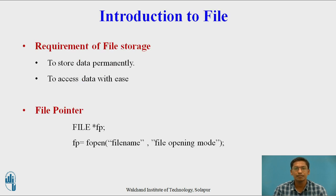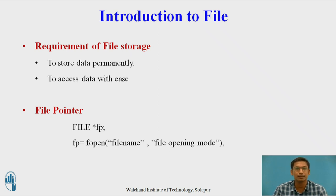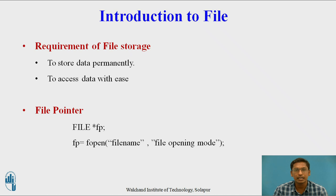This is Introduction to File. First, we will consider what is the need of storing data into the file. When you write any program in C, generally we store values in variables. So after execution of the program, whatever values you stored in a variable, those are vanished and destroyed, and memory allocated for those variables is deallocated. So it is better to use a file or database to store the values. There are two ways in which we can store the values of a variable permanently — either we store those values in a file or in a database.